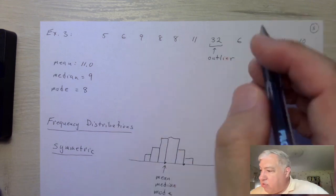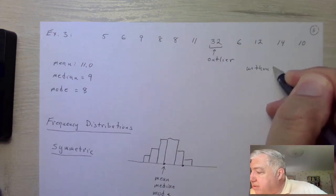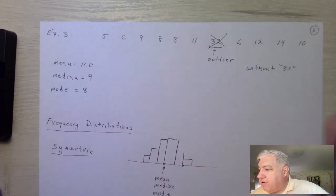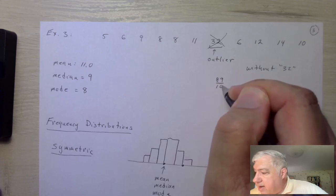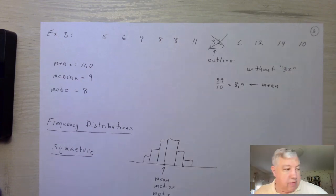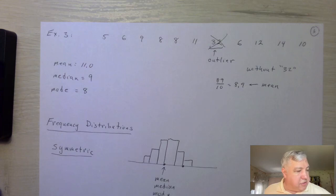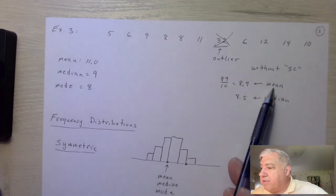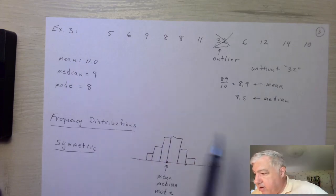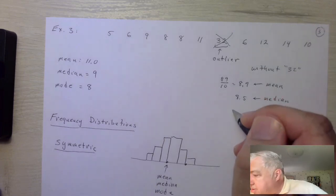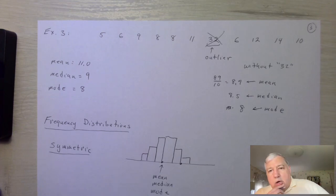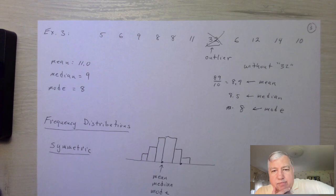Now if we do the same thing without the outlier 32, we add all the other numbers and get 89. Dividing 89 by 10 gives a mean of 8.9. The median becomes 8.5. So the mean changed quite a bit — from 11 to 8.9 — while the median only went down slightly. The mode is still 8, unchanged.